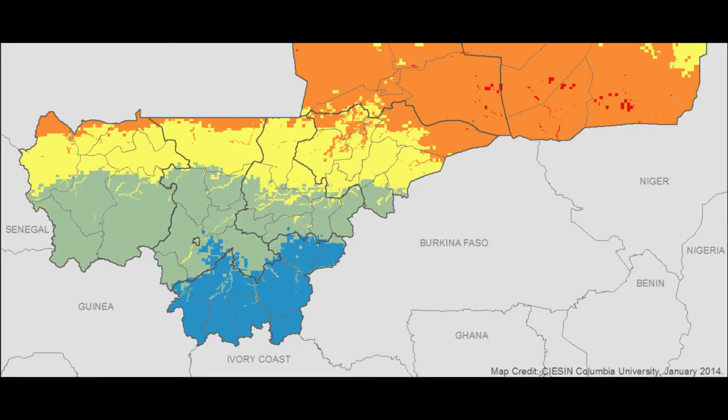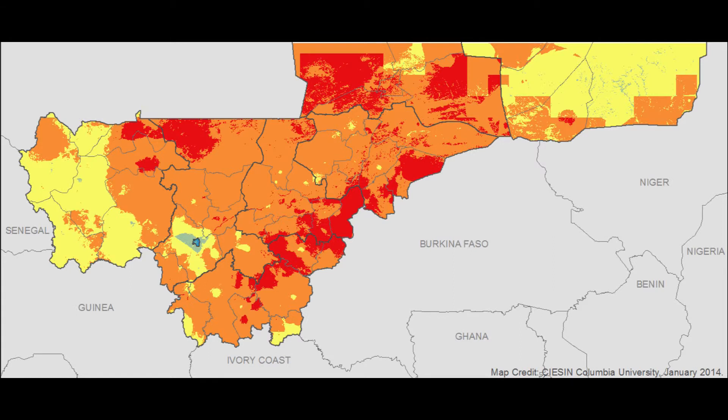The exposure layer reflects the south-to-north gradient of decreasing rainfall and increasing rainfall variability, with higher vulnerability in the north. The sensitivity component reflects a pattern of generally high to moderately high sensitivity across most of Mali, with pockets of lower sensitivity in the east and west as well as around Bamako, Mali's capital.